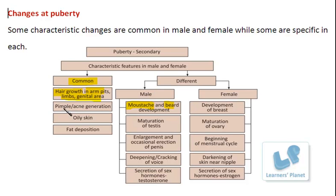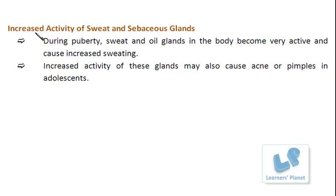The second characteristic is observed in the skin. There is pimple or acne generation at this age. The skin becomes more and more oily. This is because during puberty, there is increased activity of the sweat and sebaceous glands. These glands are present in the skin and they become very active at this age, resulting in increased sweating.